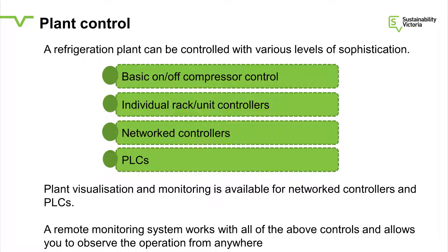We're just talking of thermostats and slightly more sophisticated controllers that do the same function. The next level up is what we call individual rack or unit controllers. These are control devices that have some intelligence, that can work off timers, that can react to inputs, and can do things a little bit better. So instead of just having a thermostat on your room, you can have a controller that also turns the fans on and off, or that responds to a switch on the door. So when the door is shut, it turns the fans at a lower speed. Now that requires a bit of intelligence, so you have a unit controller.